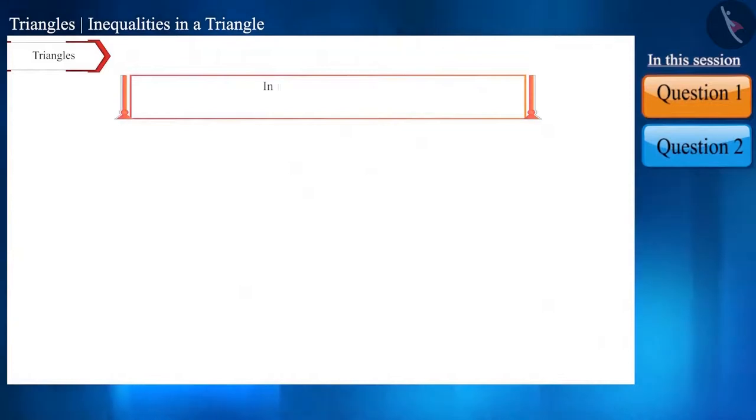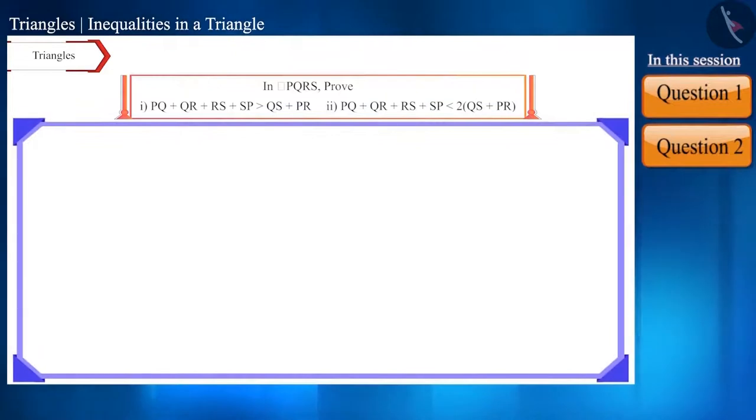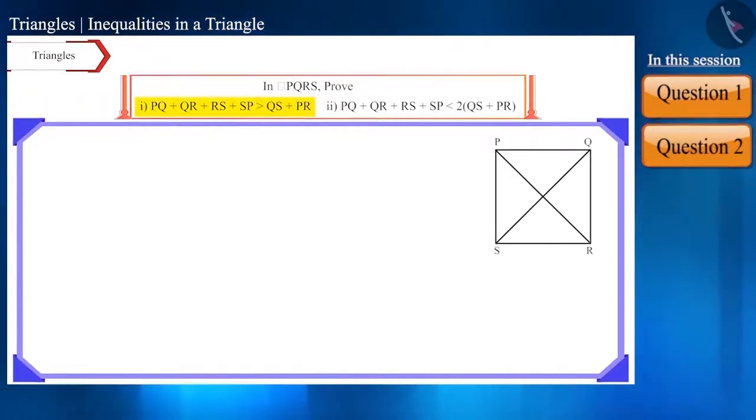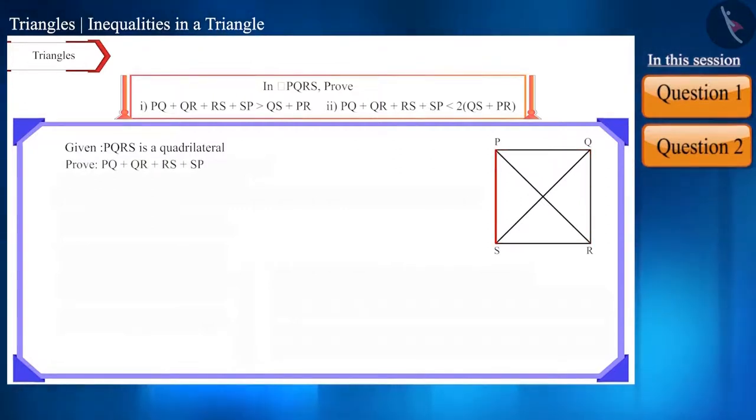Prove the following statements in quadrilateral PQRS. First of all, we will construct a quadrilateral and name it PQRS. Now, we will join the diagonals QS and PR. We will solve the first question. We have to prove that PQ plus QR plus RS plus SP is greater than QS plus PR.